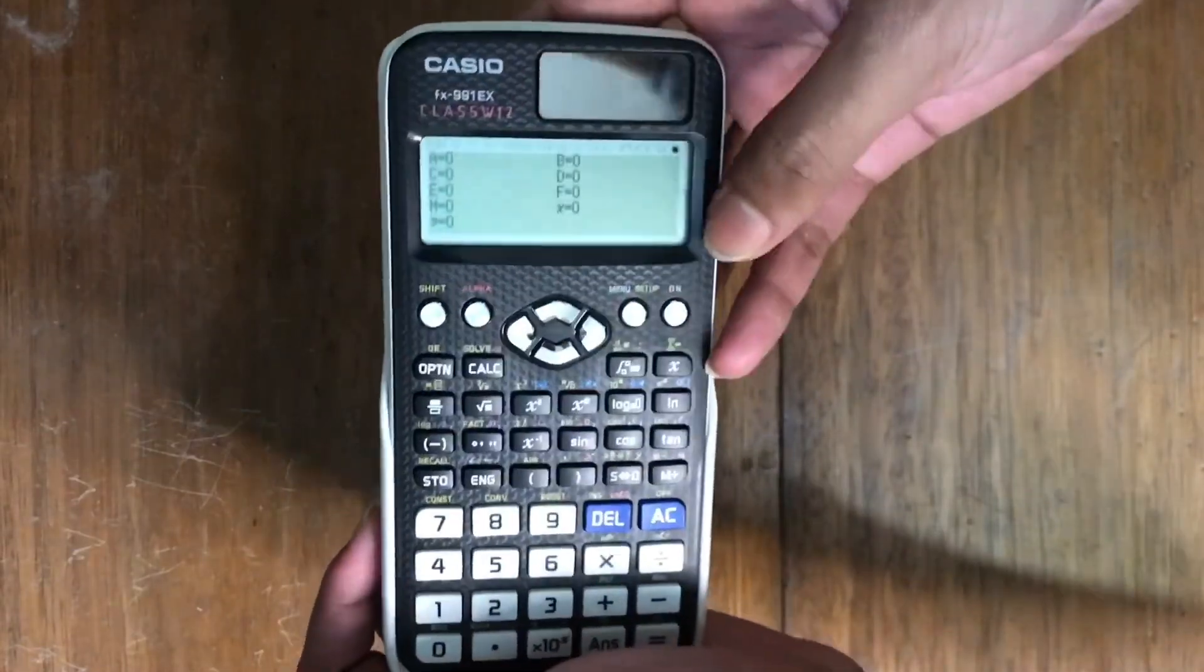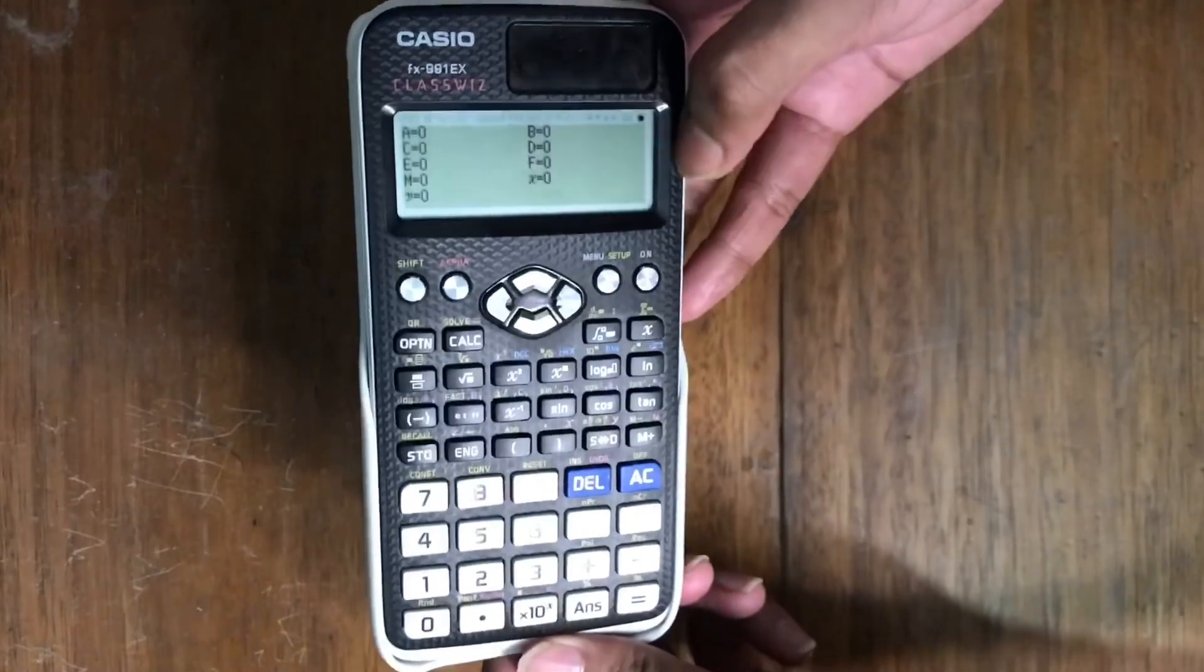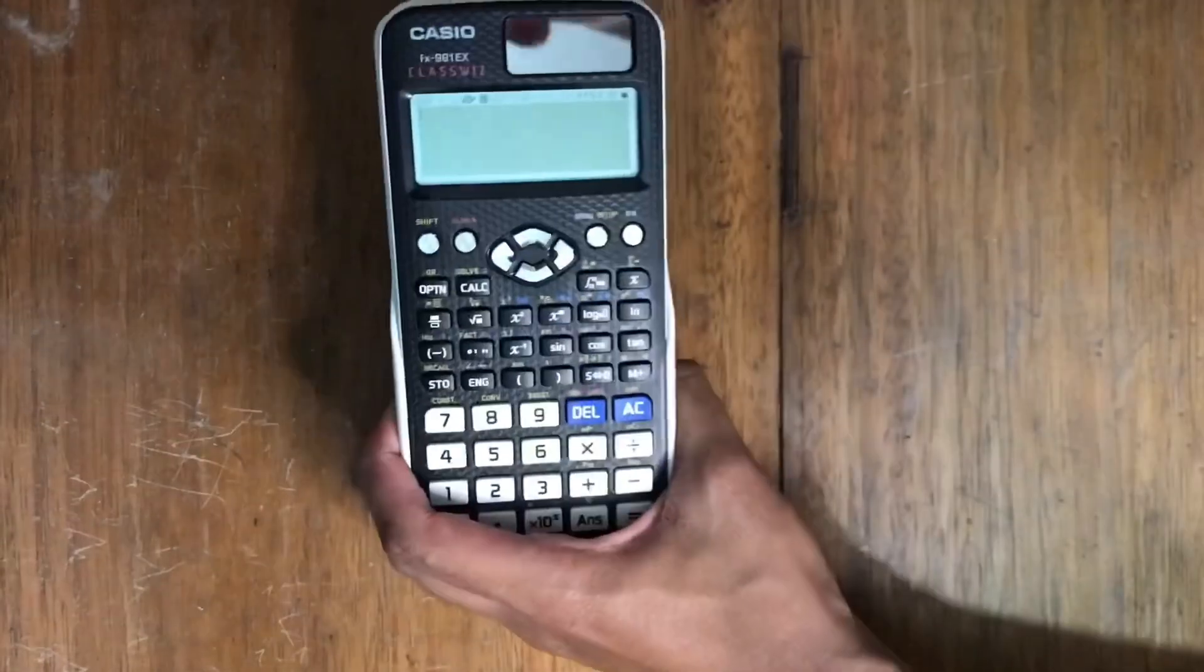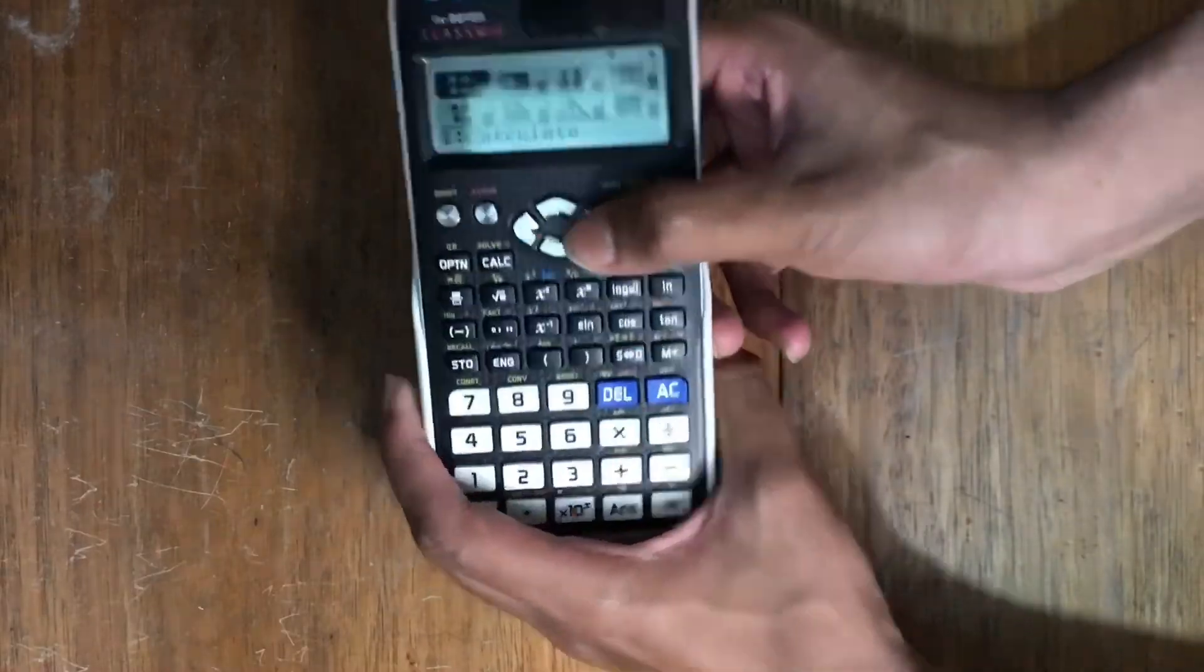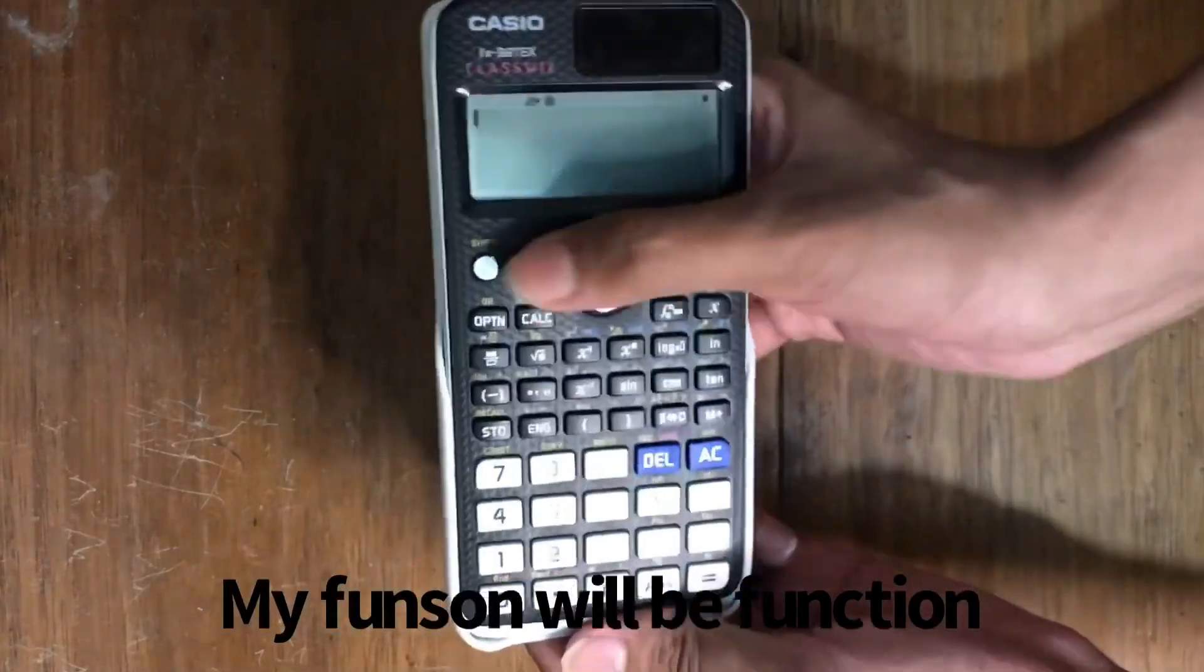Online visualization service using QR code. Generate QR codes of equations input into the calculator by a simple operation. Graphs and graphics can be displayed on smartphone or tablet screens. It's a comprehensive set of advanced functions unique to Casio scientific calculators.